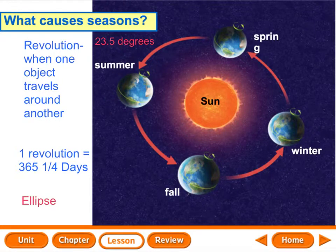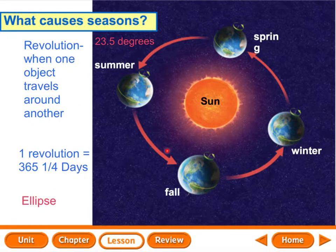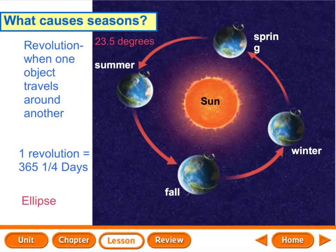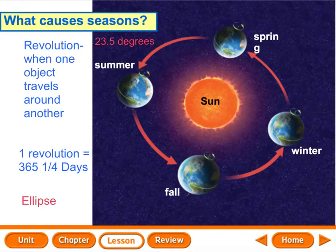So when it's summer somewhere, the other hemisphere is having winter. If it's spring in one hemisphere, it's fall in the other — it's always opposites. Revolution is when one object travels around the other, and the path that it takes is its orbit. One revolution is 365 days, and the shape is an ellipse. What causes the seasons? Revolution plus the 23.5 degree angle tilt. And when it's summer in one hemisphere, it's winter in the other.